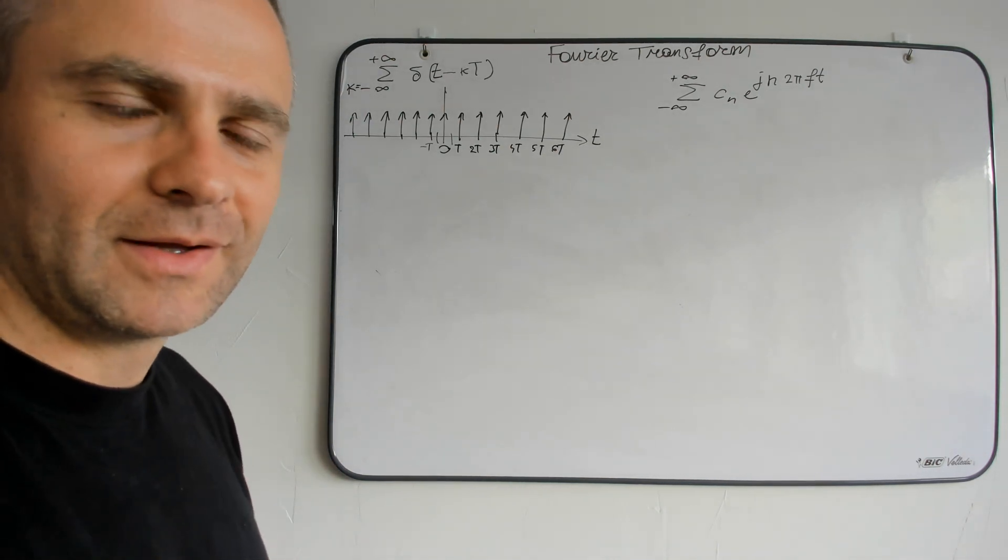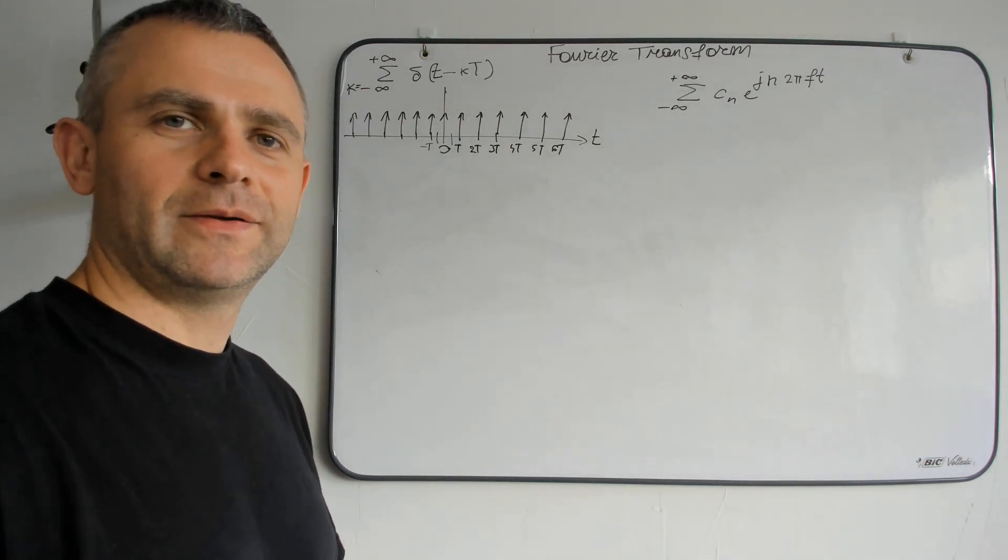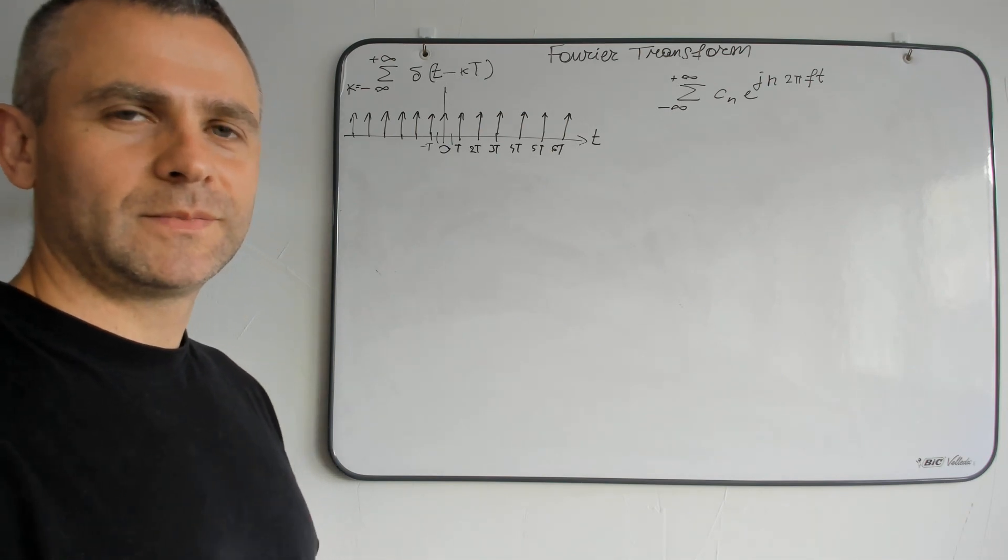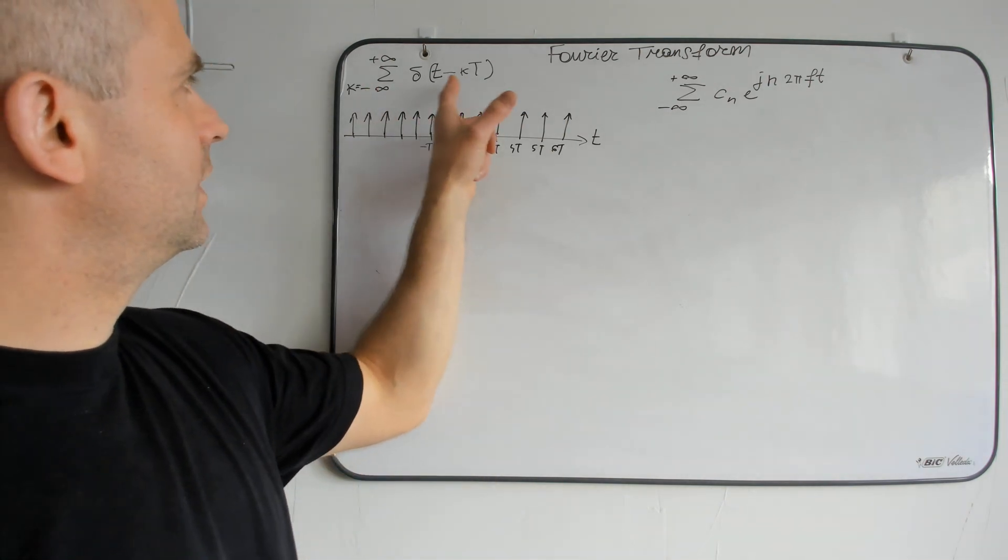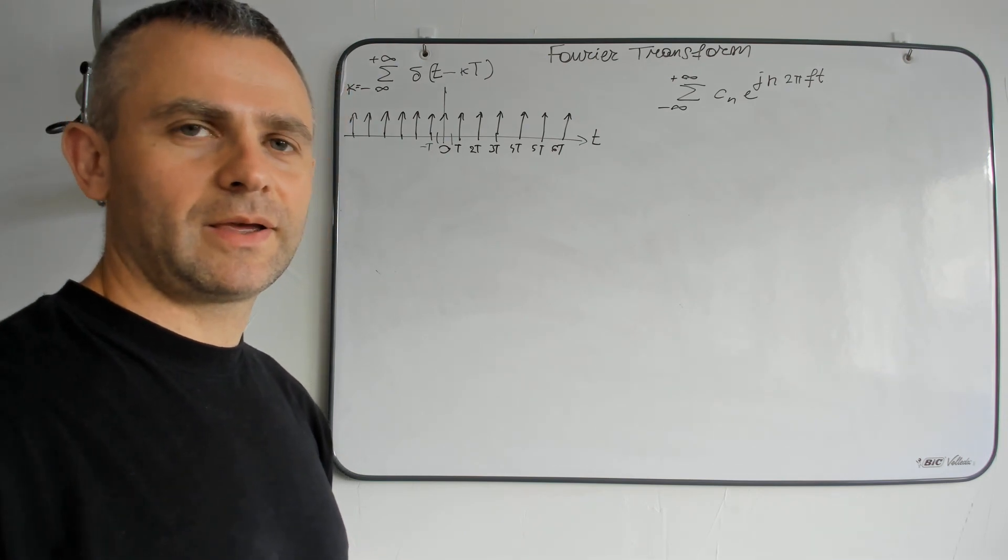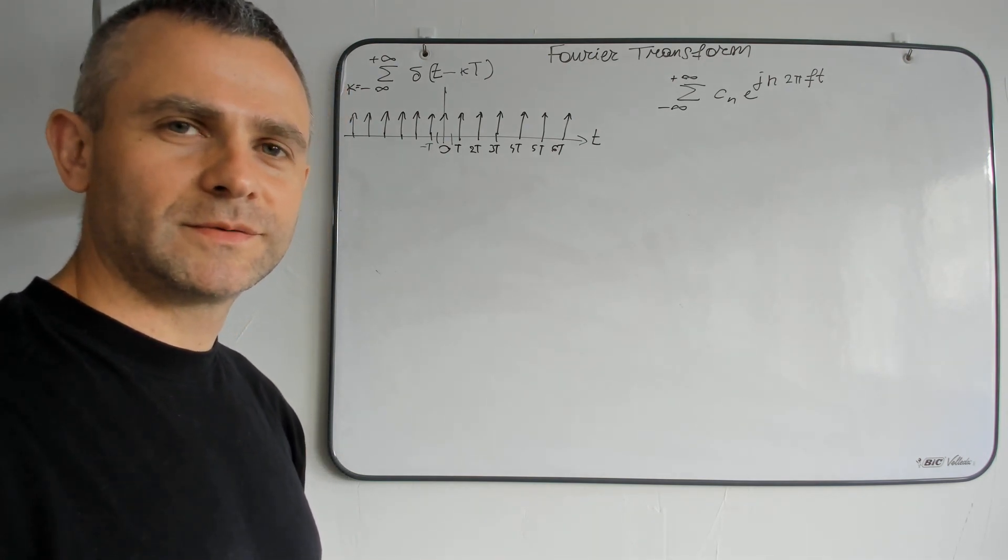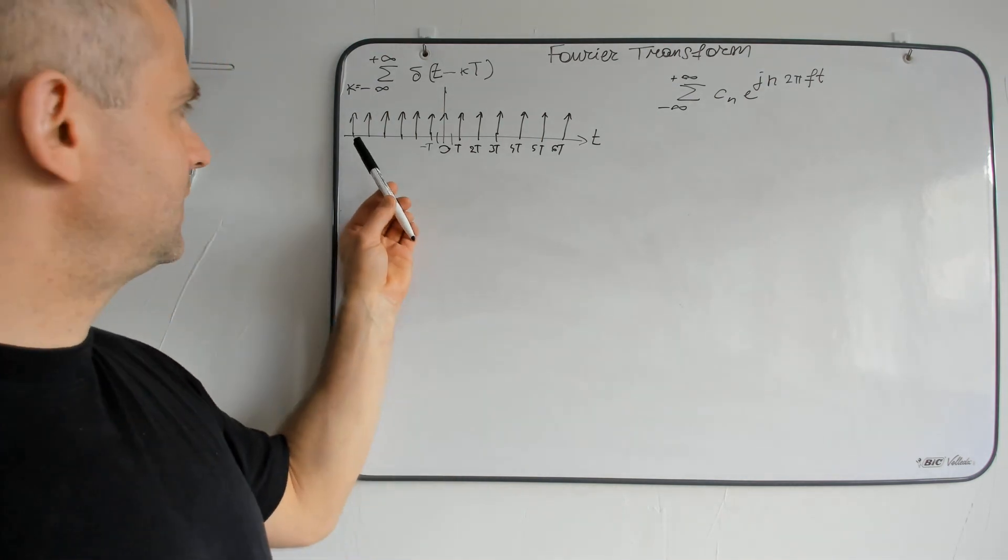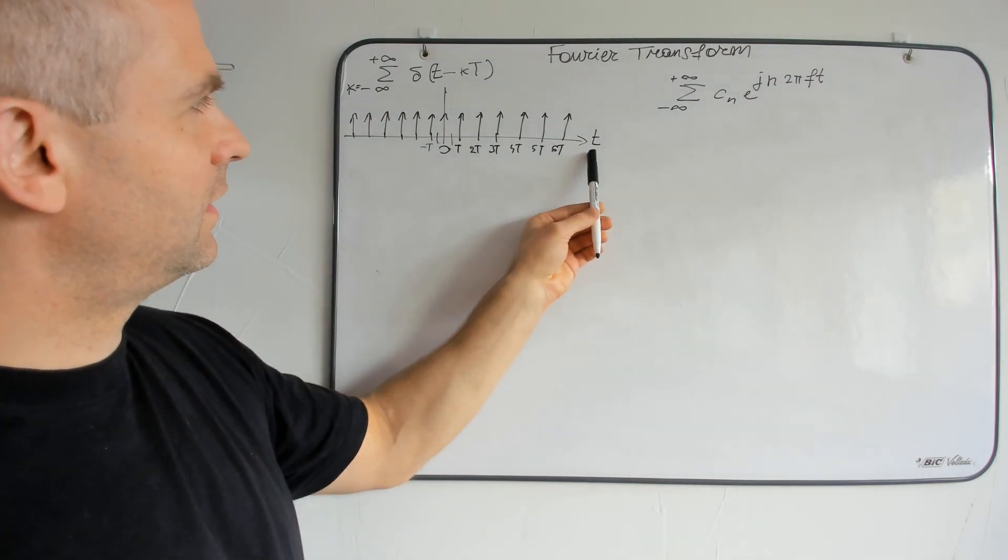Hi! Let's see how to find the Fourier transform of Dirac comb. So, Dirac comb is a sum of delta functions and it can be represented like this.